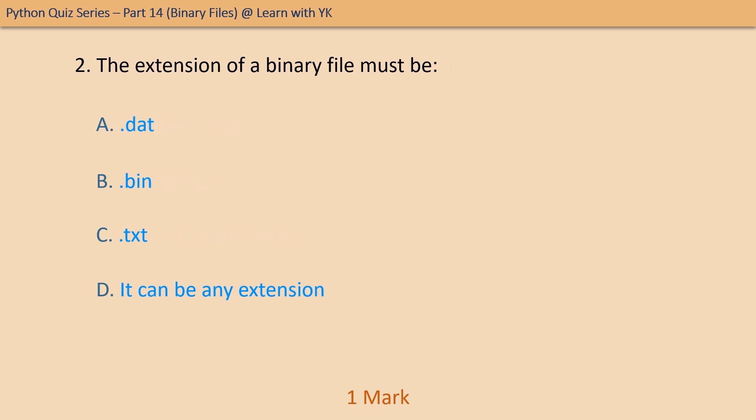Question number two: the extension of a binary file must be — pick the correct option. The correct option is again option D — it can be any extension.